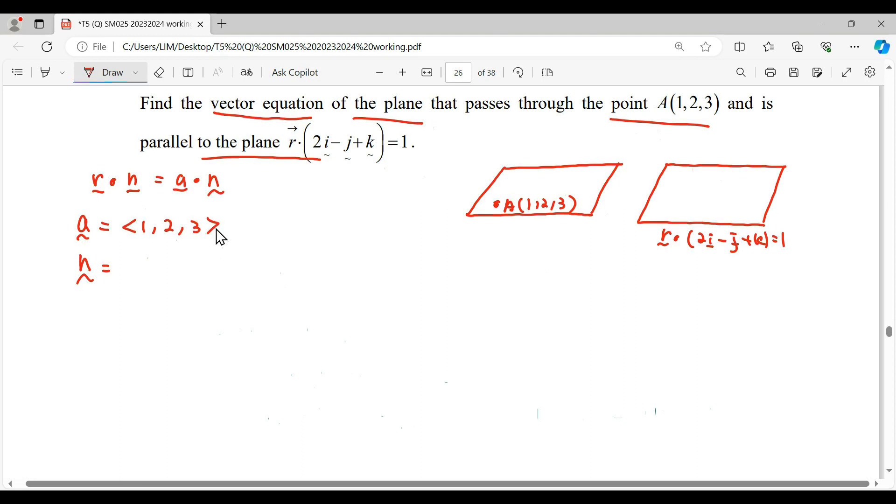Then another information we need to find is the normal vector coming up from this surface. By the given information here, they say it's parallel to another plane. This plane equation, we understand that this is R·n and this is our result of A·n.